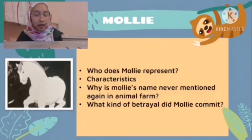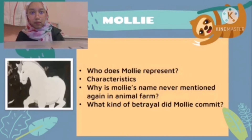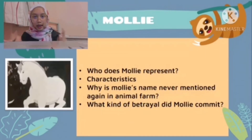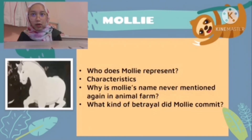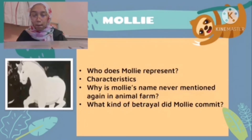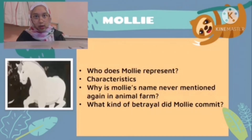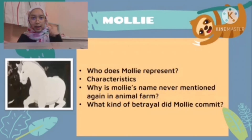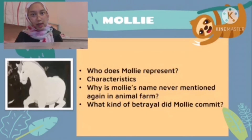This is in Chapter 4, page 28, paragraph 4. It is soon discovered that Molly has a hidden stash of sugar lumps and ribbons and has been seen allowing the man from Foxwood to stroke her nose. She was later seen in town wearing a ribbon and eating sugar. This can be found in Chapter 5, page 30, paragraph 6.